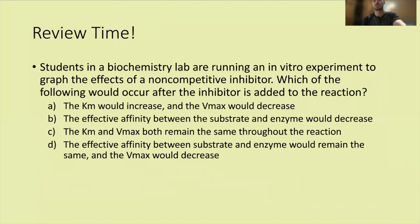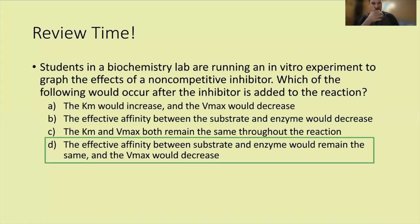Review question: students are running an in vitro experiment graphing the effects of a non-competitive inhibitor. Which of the following would occur after the inhibitor is added? The correct answer is D: the effective affinity between substrate and enzyme would remain the same and Vmax would decrease. Answer A is wrong because Km doesn't increase. Answer B is wrong because effective affinity is inversely related to Km, and Km stays the same. Answer C is wrong because Vmax does decrease.